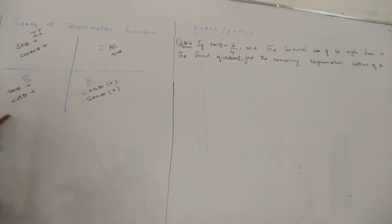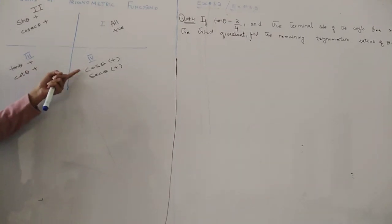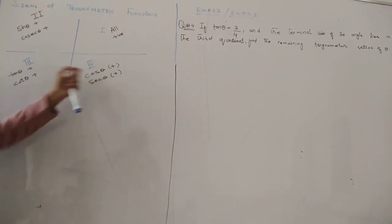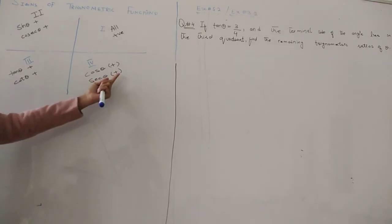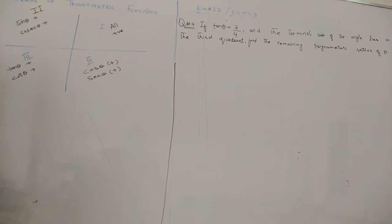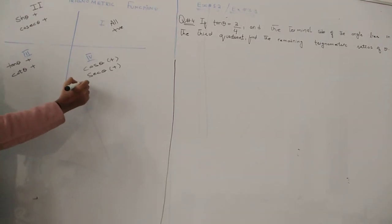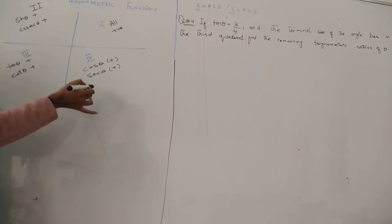The fourth quadrant: cosine is positive, and the rest are negative. Sine and tangent are negative.